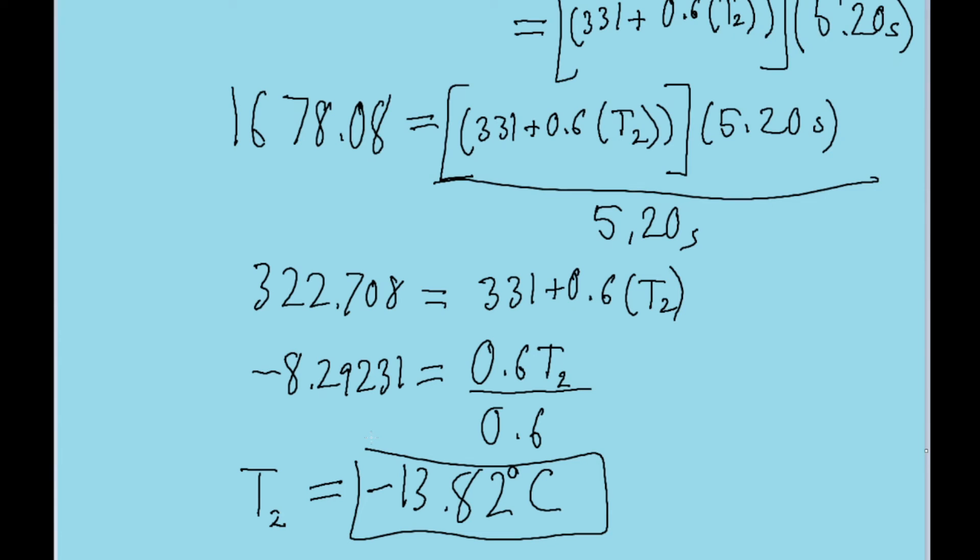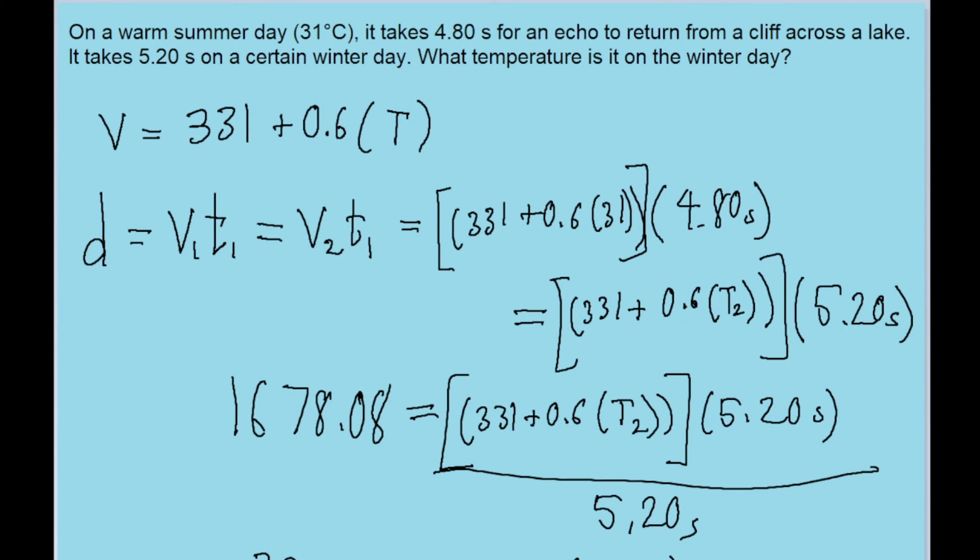That's how we could do that problem. I know the last part was a bit messy, but you could use any method to solve this equation now that there's only one unknown. You could use an equation-solving calculator or solve it symbolically—whatever works best for you.